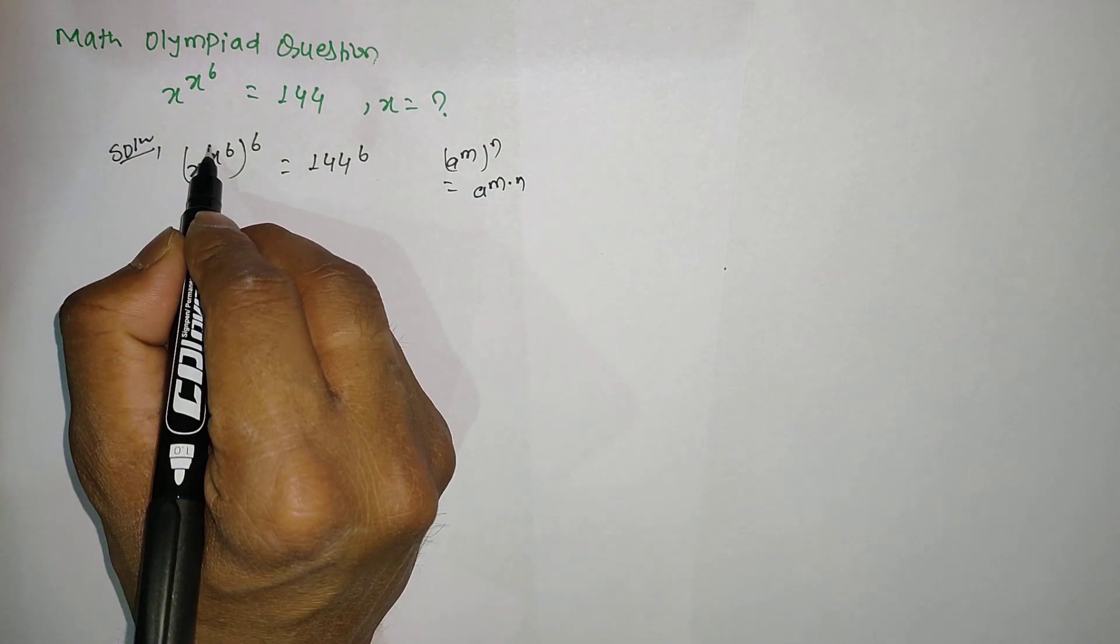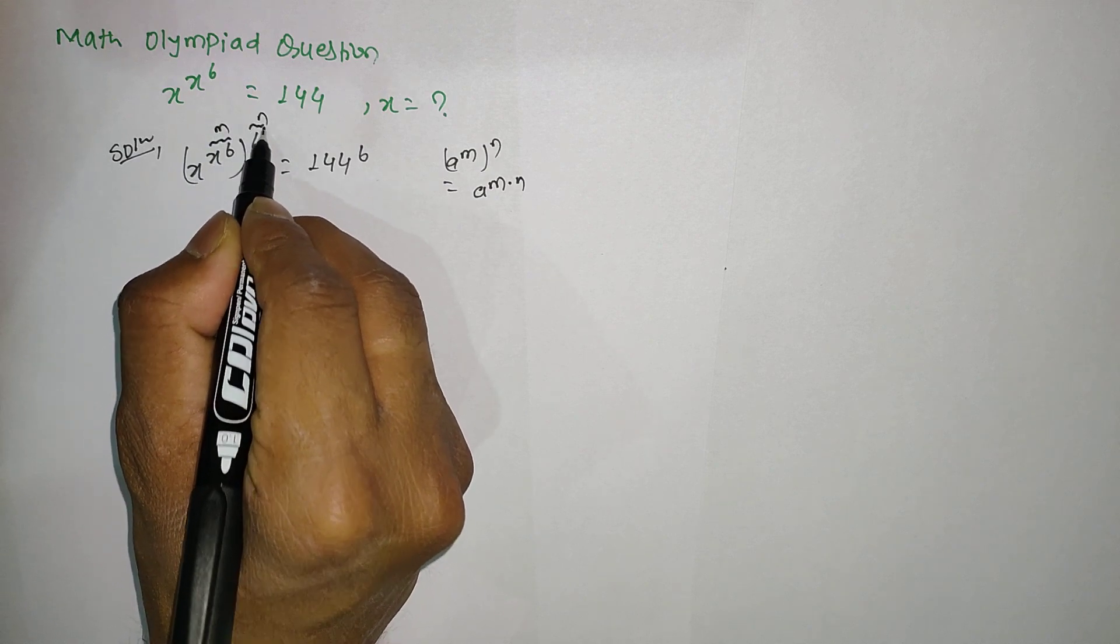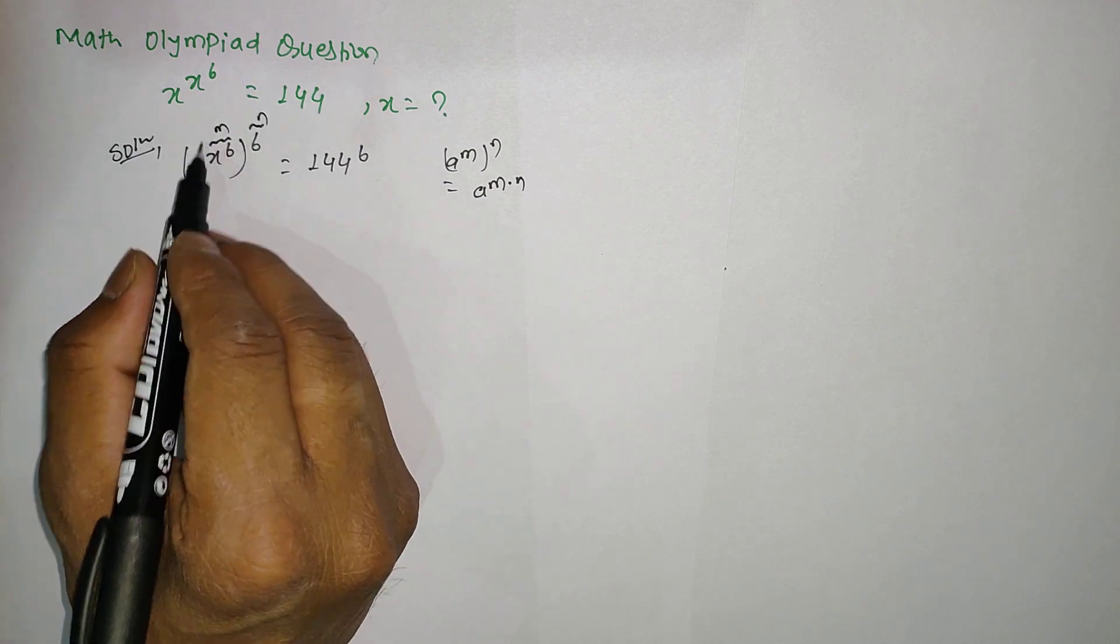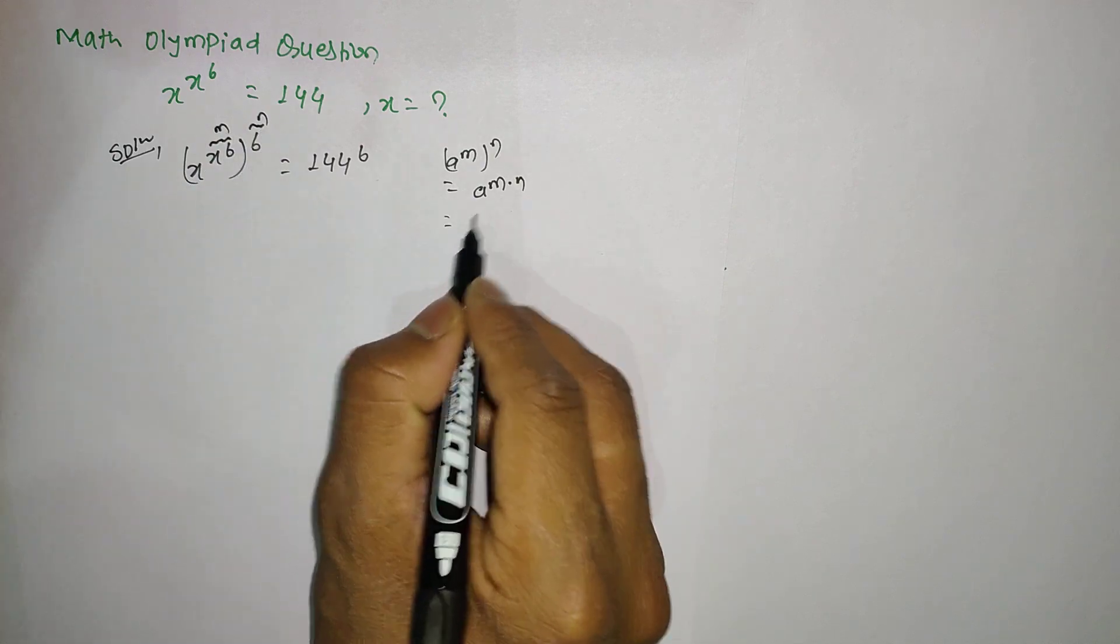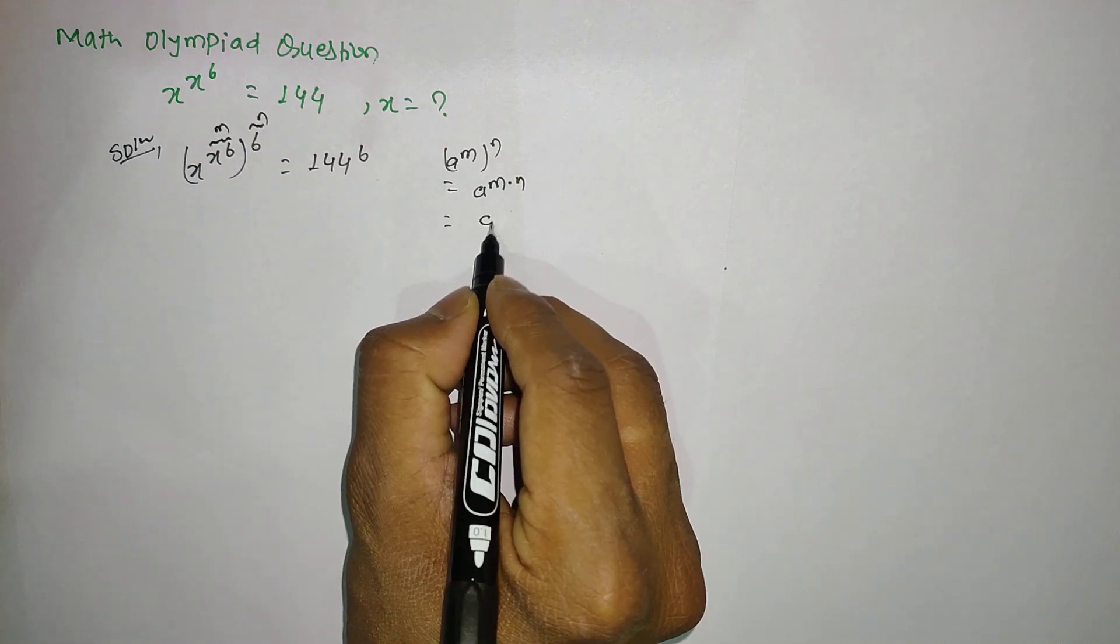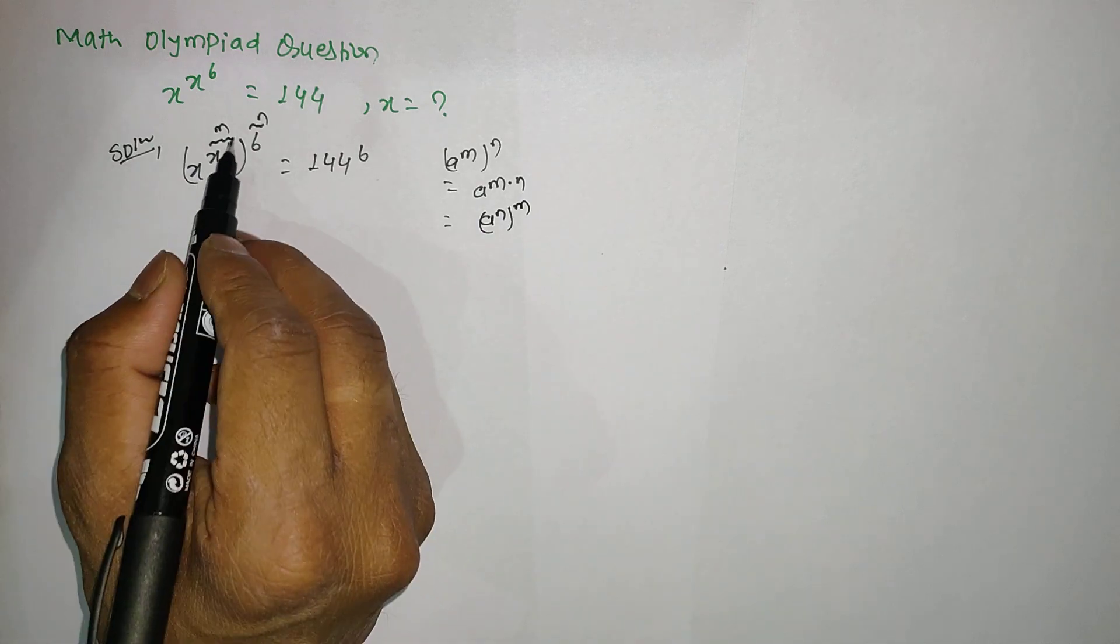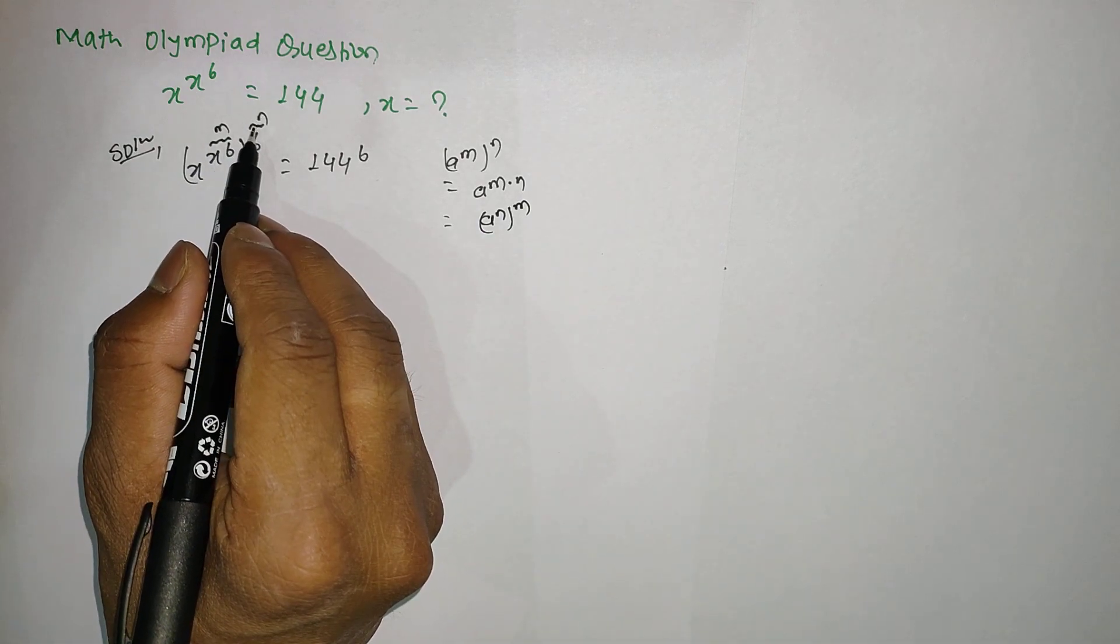So if I assume this value as m and this value as n, then we can multiply m times n. This can also be written as a to the power m to the whole power n. So same here, we can exchange the exponents.